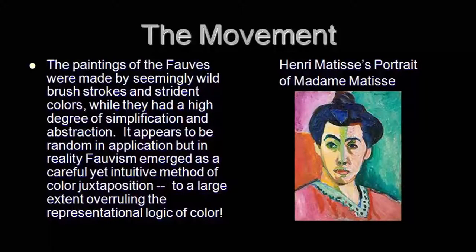Fauvist artists and Fauvism in general as a movement tried to overrule the representation logic of colour — tried to overrule the idea that the colour of a particular object should represent that object, as if the colour doesn't have an independent value or independent identity and is always tied up with the object. Fauvist painters like Matisse, Henri Derain, Vlaminck and others changed the role of colour. The way colour is perceived by the painters underwent a huge transformation, and that is one of the reasons why Fauvist paintings often look very striking artistically.